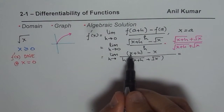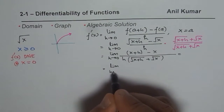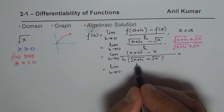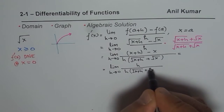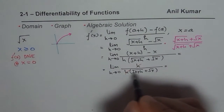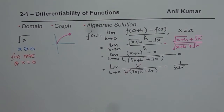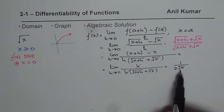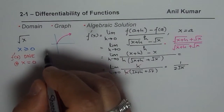Here x minus x is 0, so you get limit as h approaches 0 with numerator h and denominator h times [√(x+h) + √x]. Now h and h cancel out, and you can substitute h equals 0, giving 1 over 2√x. So at any point on this graph, the slope of the tangent line — which is the derivative of the function — is given by this expression.